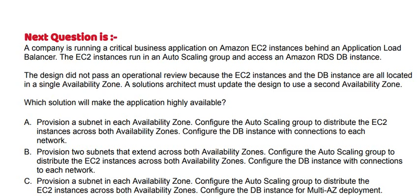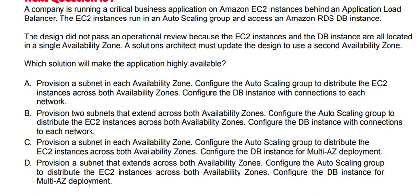Option A: Provision a subnet in each availability zone. Configure the auto-scaling group to distribute the EC2 instances across both availability zones. Option B: Provision two subnets that extend across both availability zones. Configure the auto-scaling group to distribute the EC2 instances across both availability zones. Configure the DB instances with connections to each network. Option C: Provision a subnet in each availability zone. Configure the auto-scaling group to distribute the EC2 instances across both availability zones. Configure the DB instance for Multi-AZ deployment. Option D: Provision a subnet that extends across both availability zones. Configure the auto-scaling group to distribute the EC2 instances across both availability zones. Configure the DB instances for Multi-AZ deployment.